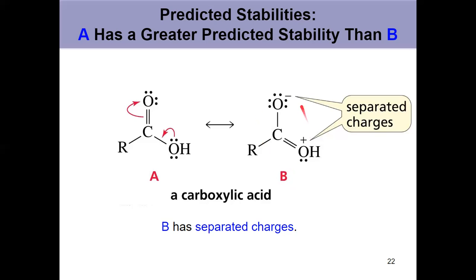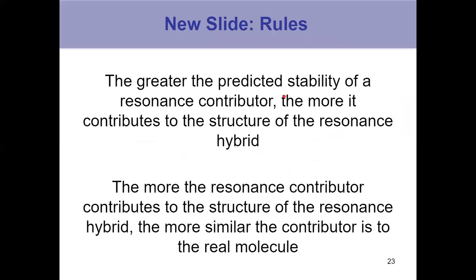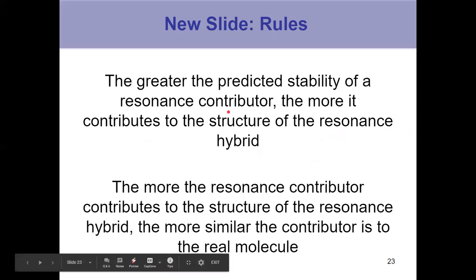The degree of contribution to the resonance hybrid depends on the stability we would assign to these contributors. Compound B has separated charges, and that inherently makes a resonance contributor less stable. Where everything's neutral, that's more stable than something where you wind up with separate charges — something negatively charged in one place and positively charged in another. Especially a positive charge on oxygen, because oxygen is electronegative — that's unfavorable. I would recommend you keep a list of things you want to avoid in your resonance contributors.